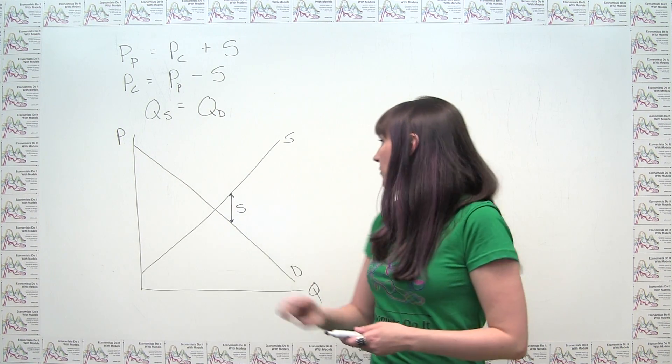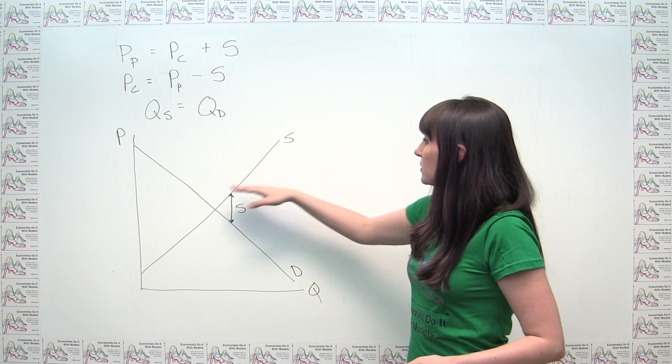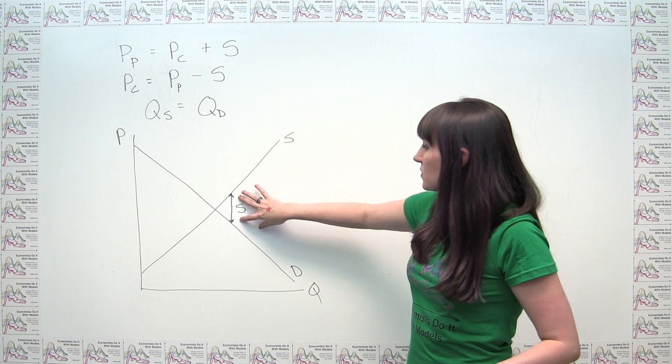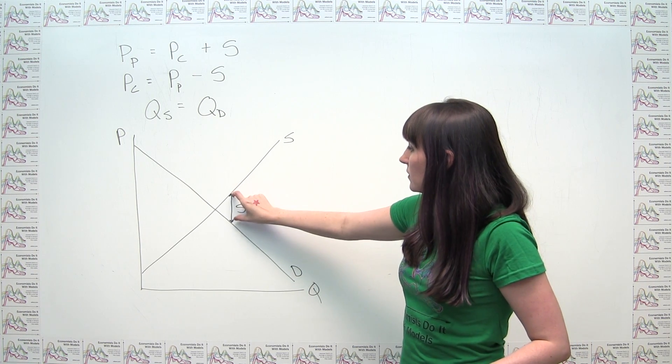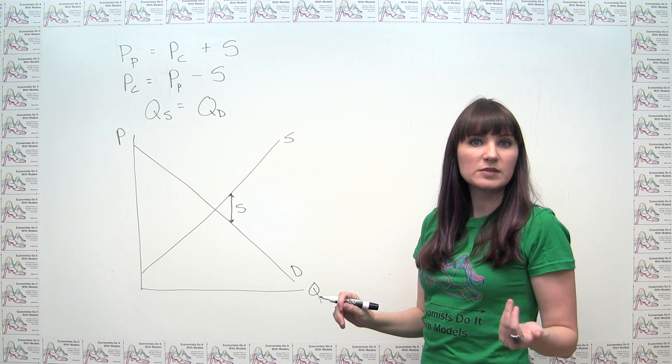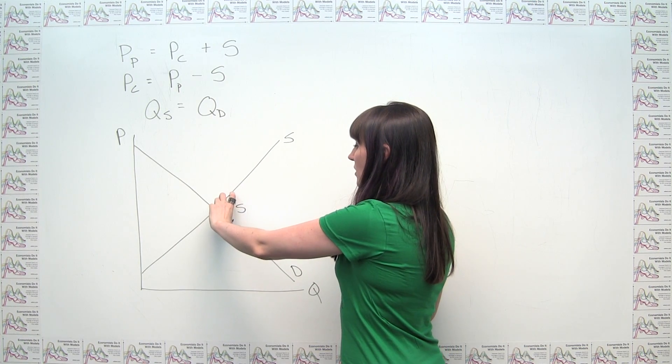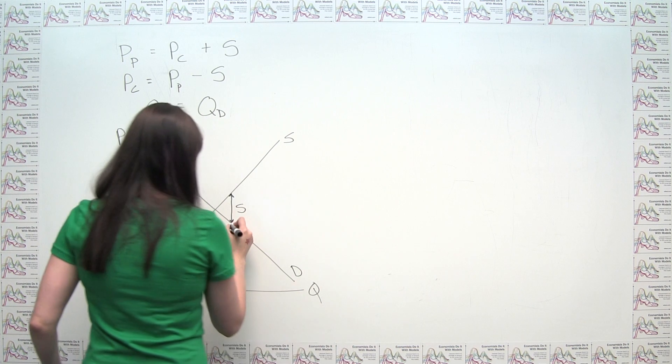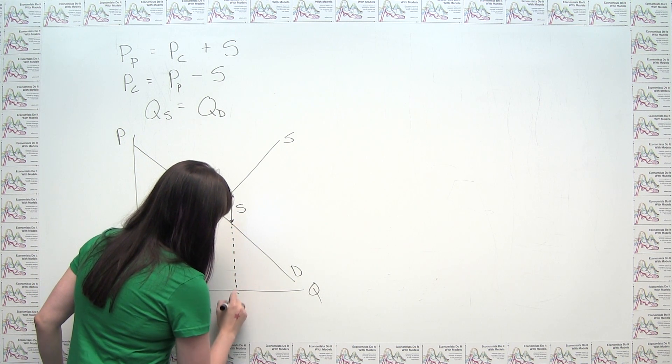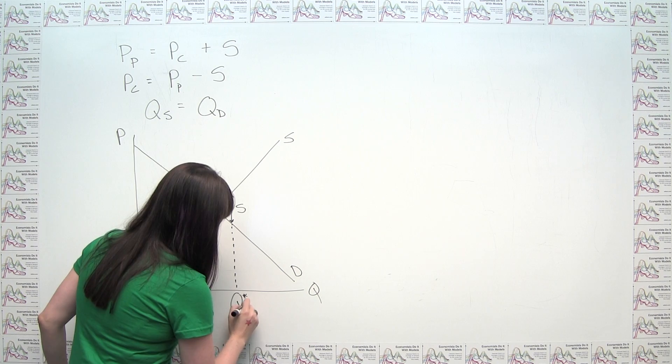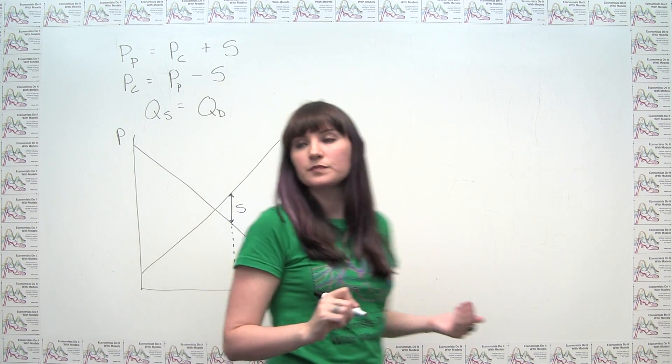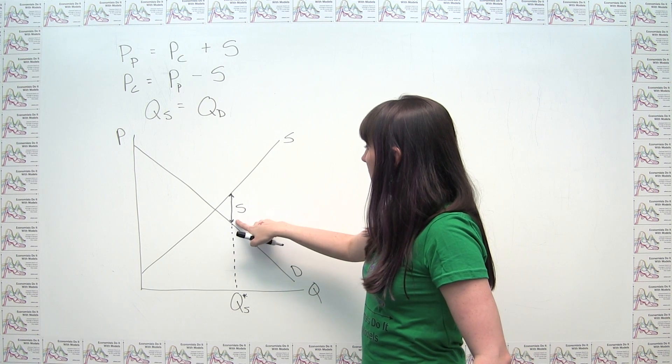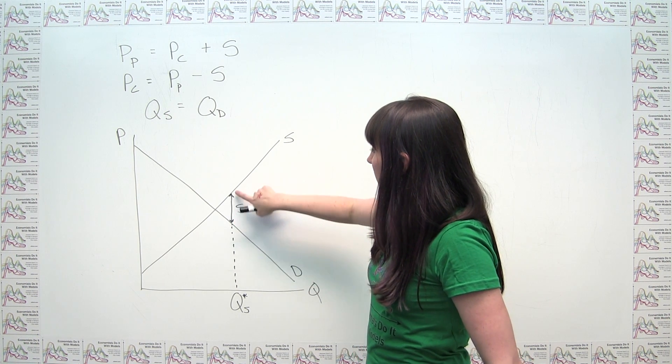And notice that when we have a supply curve that's always upward sloping and a demand curve that's always downward sloping, there's only going to be one place where the wedge between the two prices is exactly the amount of the subsidy. So we can conclude that this must be our market equilibrium quantity with the subsidy. Let's pull this down here, and I'll call this Q star sub S.